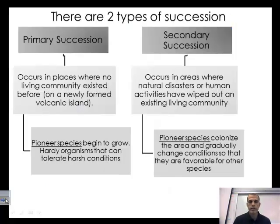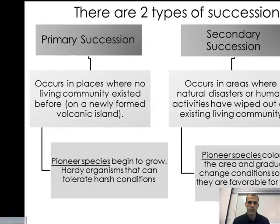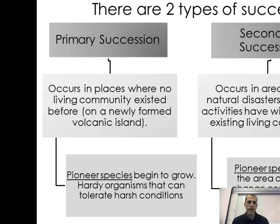We're going to take a look at two different types of ecological succession: primary succession versus secondary succession. Primary succession occurs in places where no living communities existed before — the land formation is new. An example is volcanic islands. When a volcano erupts from undersea, the lava eventually hardens and creates a new land formation.